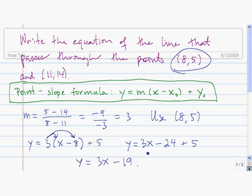That's the equation of the line in slope-intercept form that passes through the point 85 and 1114.